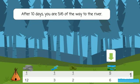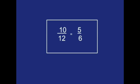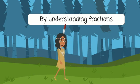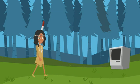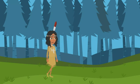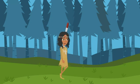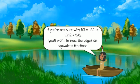After ten days, you are five-sixths of the way to the river. Ten-twelfths equals five-sixths. By understanding fractions, you're able to know where you are going. No computer required. If you're not sure why one-third equals four-twelfths or ten-twelfths equals five-sixths, you'll want to read the pages on equivalent fractions.